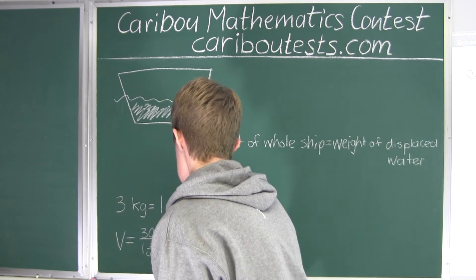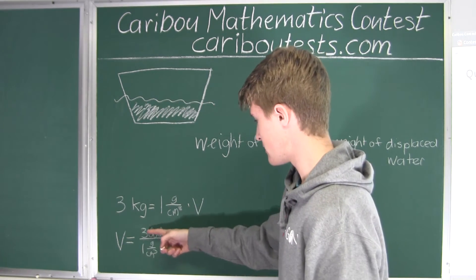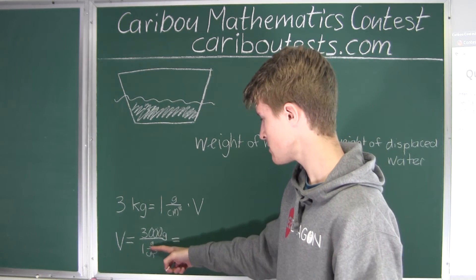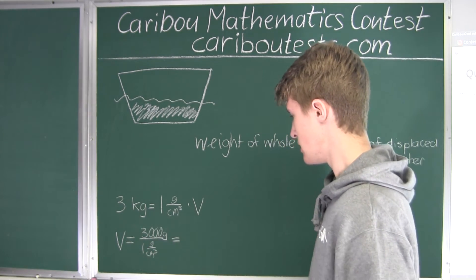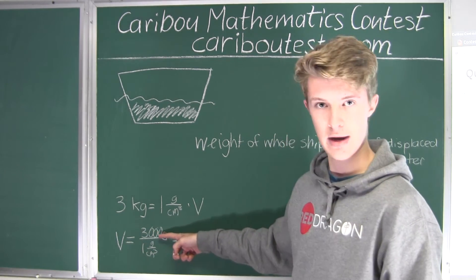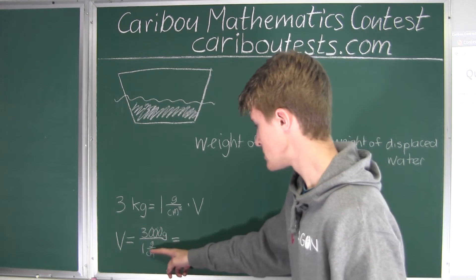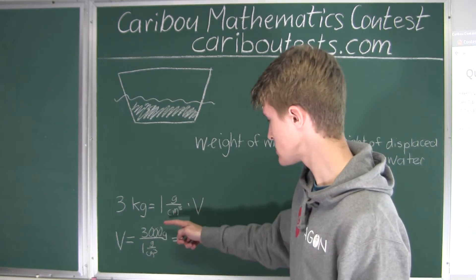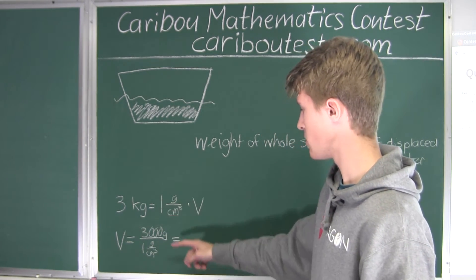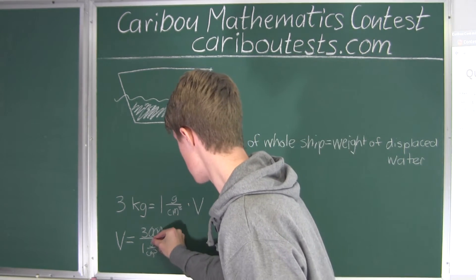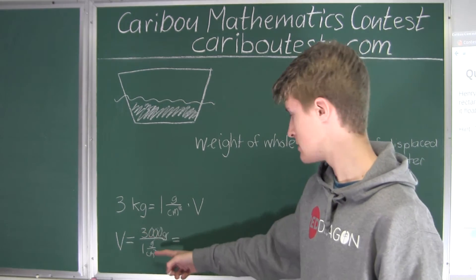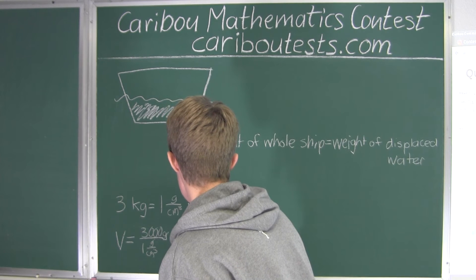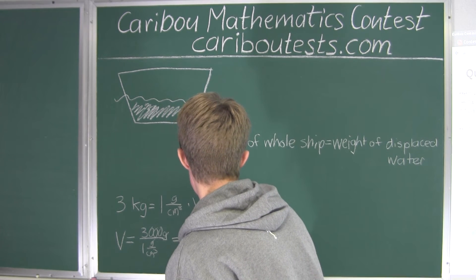Then we have divided by 1 g/cm³. This is equal to, if we have this divided by this fraction, then you just multiply by the inverse of the fraction. So it's like 3,000 grams multiplied by cm³ over 1 gram. The grams and the gram cancel out. So all we have is 3,000 times cm³, which equals 3,000 cm³.